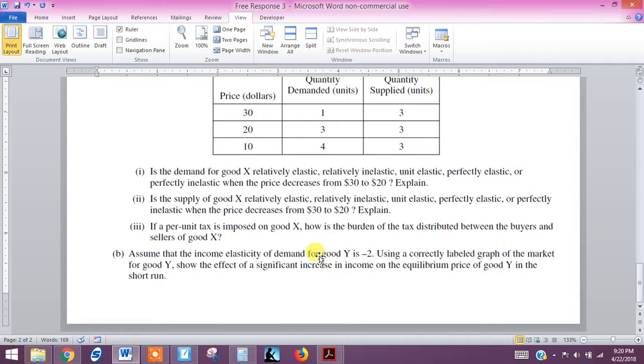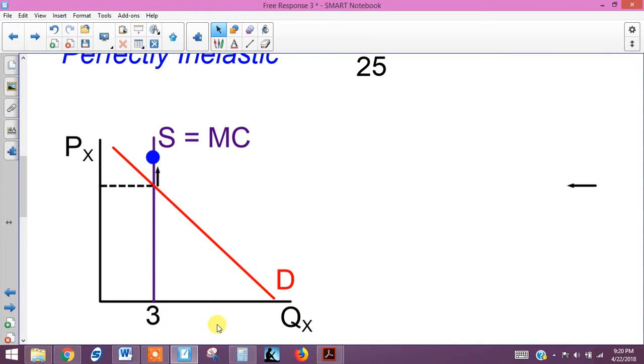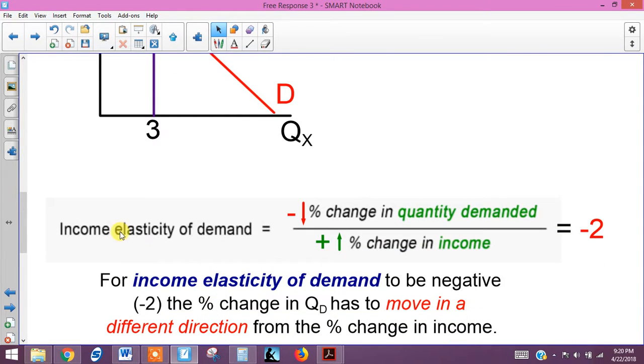So we need to understand what this negative means. When we look at the formula for income elasticity of demand, it's the percentage change in quantity demanded over the percentage change in income. So if this is negative, like we know it is, it means that these two have to be moving in different directions in order for the whole expression to be negative. One's got to be negative and the other has to be positive.